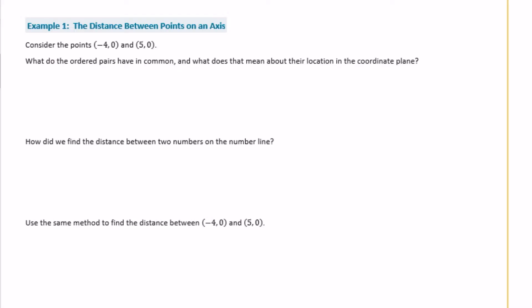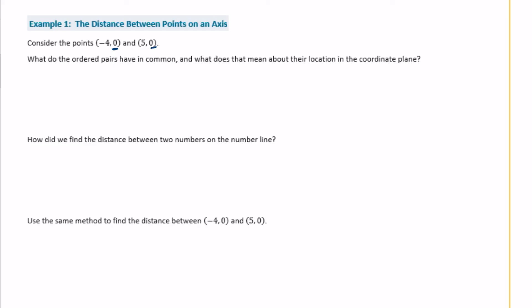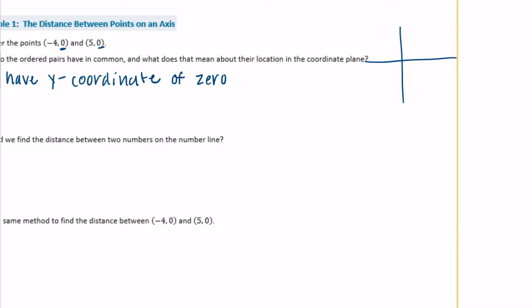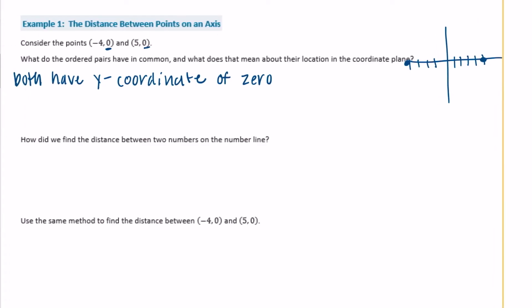Example 1: the distance between points on an axis. Consider the points negative four, zero and five, zero. What do the ordered pairs have in common and what does that mean about their location in the coordinate plane? They both have a y-coordinate of zero. Plotting them: negative four, zero is four units left, and five, zero is five units right. They're both on the x-axis because they both have the same y-coordinate.